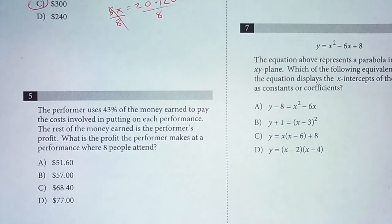The performer uses 43% of the money earned to pay the costs involved in putting on each performance. The rest of the money earned is the performer's profit. What is the profit the performer makes at a performance where 8 people attend?